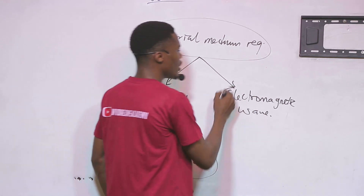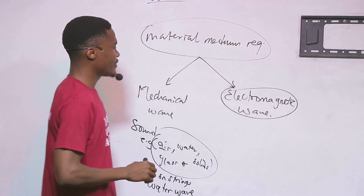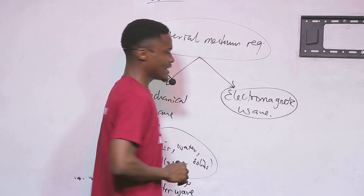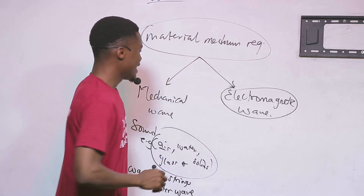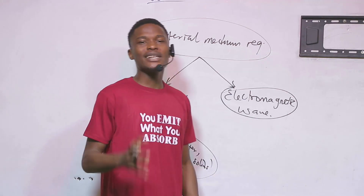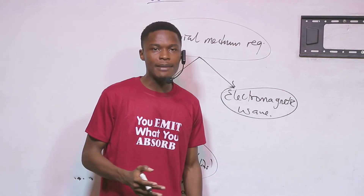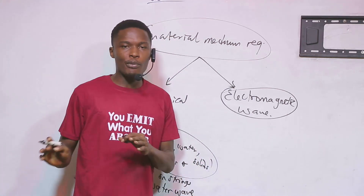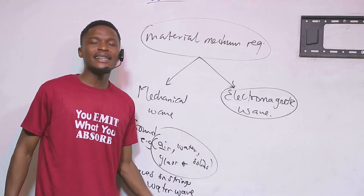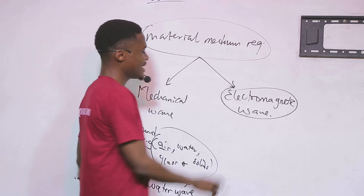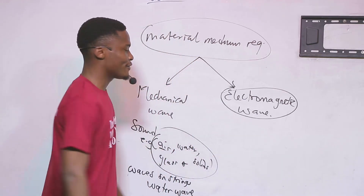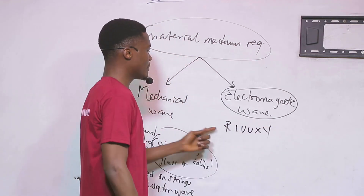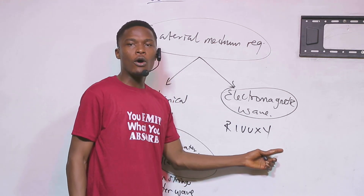On the other hand, we have electromagnetic waves. These are waves that do not require a material medium for their propagation — meaning they don't need anything to carry them from one point to another. They can propagate on their own. Examples of electromagnetic waves can be summarized in the acronym R-I-V-U-X-Y, and we are going to talk about what each of those represents.